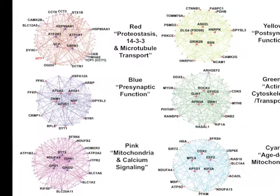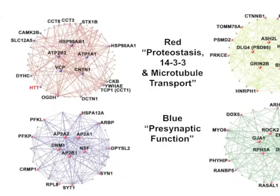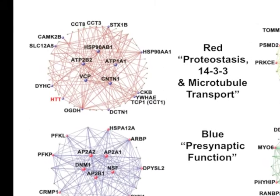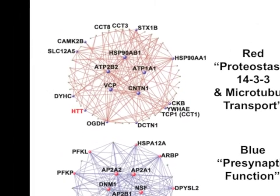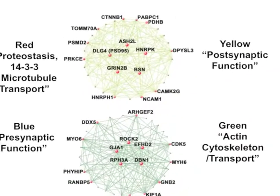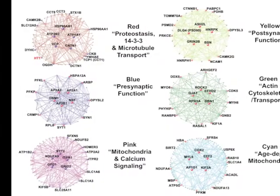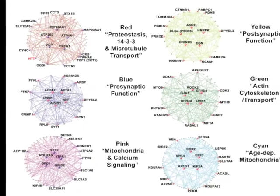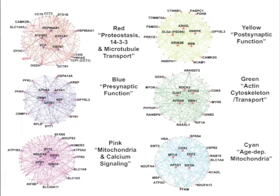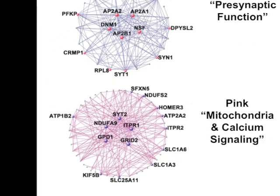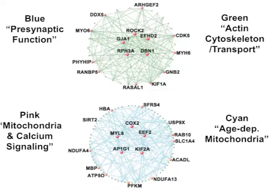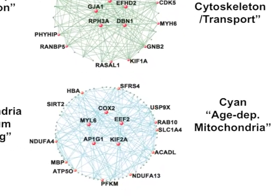Our WGCNA analysis yielded six interesting Huntington-correlated protein modules, with Huntington itself residing in the so-called red module. The six Huntington-correlated modules appear to contain proteins with different functions and highlight different aspects of Huntington biology. The Huntington-containing red module is enriched with chaperones, 14-3-3 proteins, and microtubule-based transport proteins. The yellow module is enriched with postsynaptic proteins, the blue module with presynaptic proteins, and the green module is enriched with proteins in actin cytoskeleton function. The pink cerebellar module is enriched with proteins in mitochondria function and calcium signaling, and the age-dependent cyan module is enriched with proteins in mitochondria function.